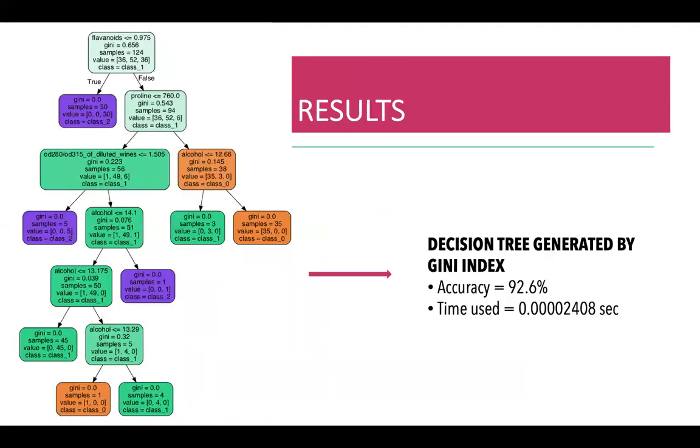This is the second tree that we generated using the Gini impurity index. Similar to the previous decision tree, flavonoids was also placed at the root node because it has the lowest Gini impurity. As we move down the tree, the process will continue for each impure leaf node until the tree is complete.